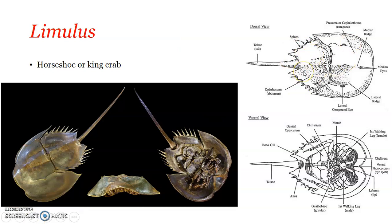The opisthosoma is hexagonal in shape and is movably articulated with the prosoma — it can be bent at the joint between them. The opisthosoma consists of six mesosomal segments, visible on the ventral side, and an unsegmented metasoma which is continuous with a long telson or caudal spine. So there are six mesosomal segments and one unsegmented metasoma with a long telson.